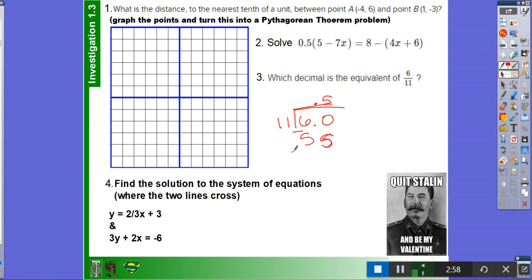And you put the decimal point up there, and 11 goes into 60 five times. And that equals 55. Then you subtract, and you get 5.